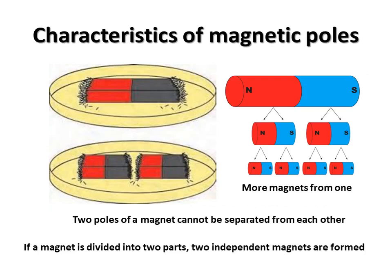Now let us learn the characteristics of magnetic poles. Take a bar magnet that can be cut with scissors or a knife. Place iron filings on a sheet of paper and place the magnet on it. Most of the iron filings will stick to its poles. Now cut the magnet into two pieces and place those pieces on iron filings. Pick up each piece and observe. If a magnet is divided into two parts, two independent magnets are formed. This means the two poles of a magnet cannot be separated from each other.